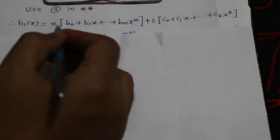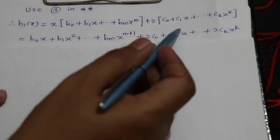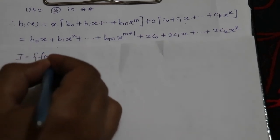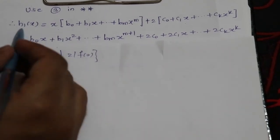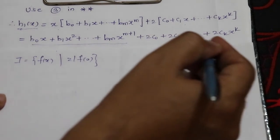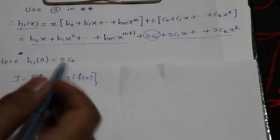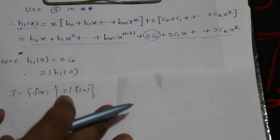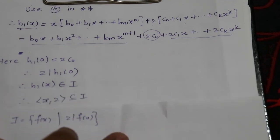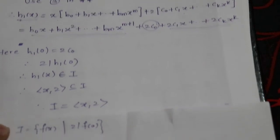Expanding h₁(x) = x·g(x) + 2·h(x) and evaluating at 0: all terms containing x vanish, so h₁(0) = 2c₀. This is clearly divisible by 2, so 2 | h₁(0). Therefore h₁(x) ∈ I, which gives ⟨x, 2⟩ ⊆ I. Hence I = ⟨x, 2⟩, and therefore I is not a principal ideal in ℤ[x].